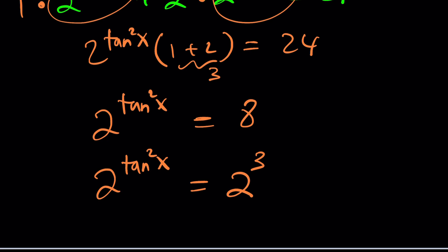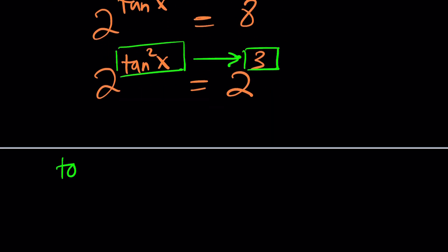But what happens if x is complex? That's something for you to think about because complex numbers are different, right? So now we can safely say that in the real world, tan²x must be 3. That's a good improvement, isn't it?